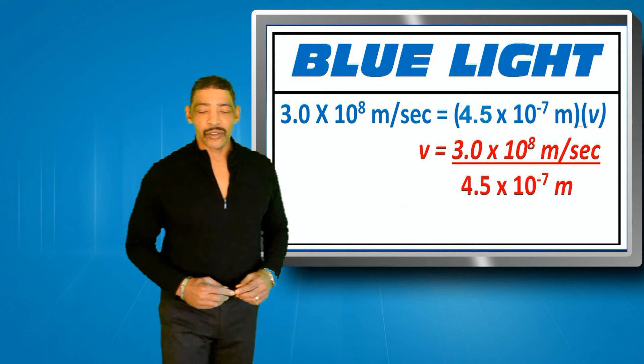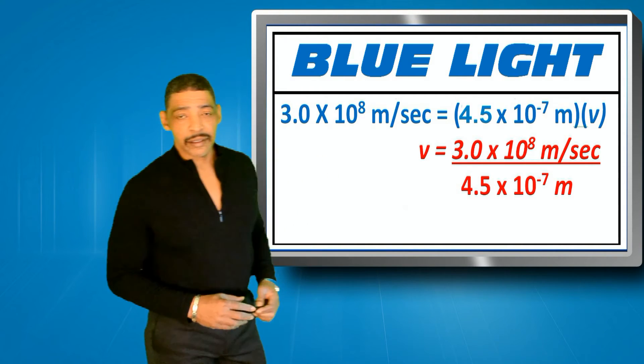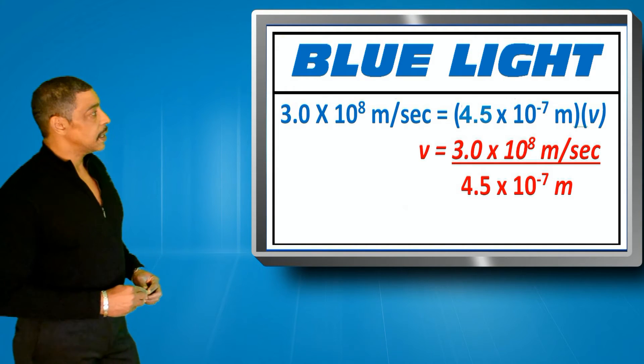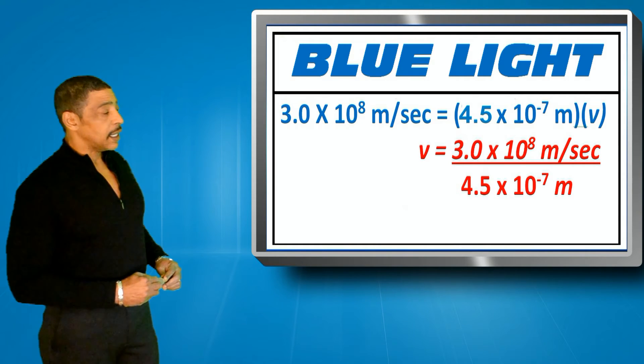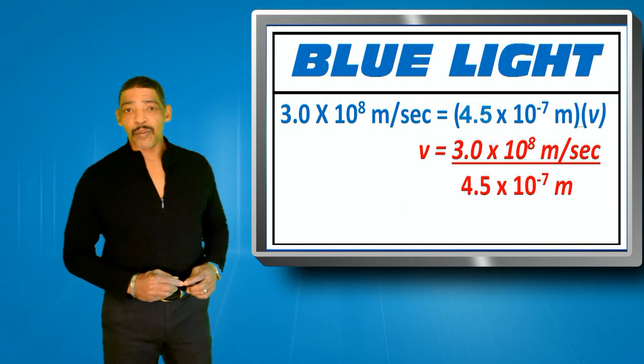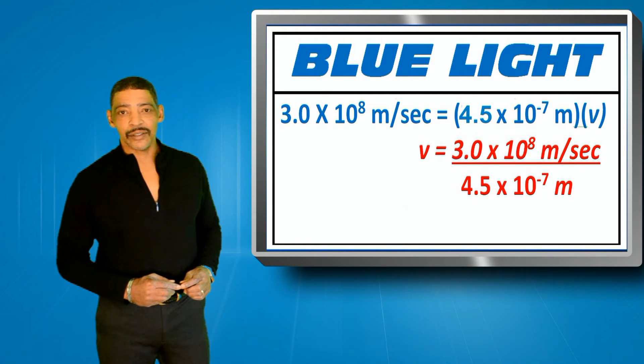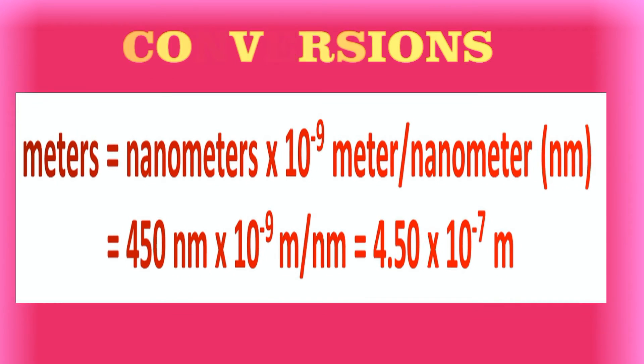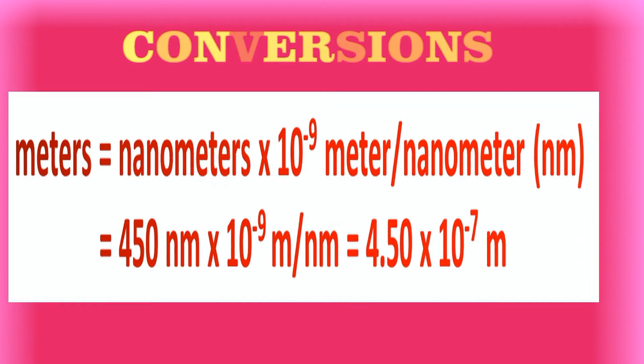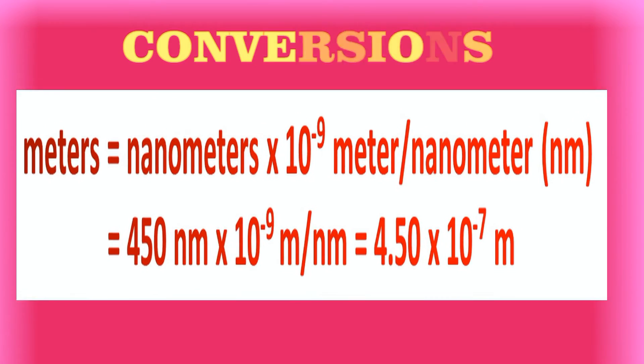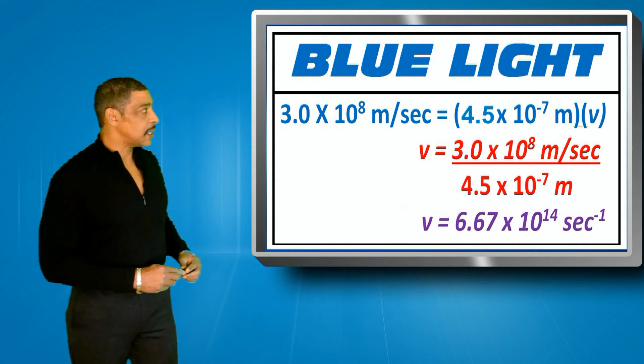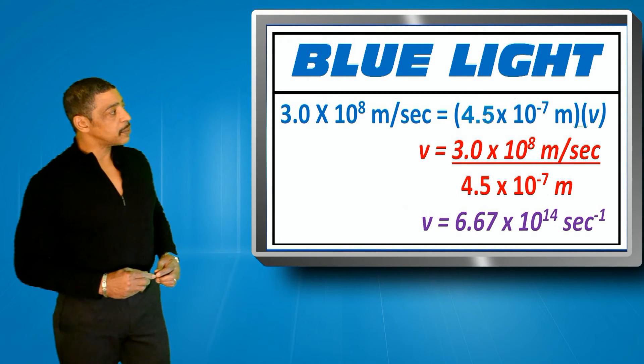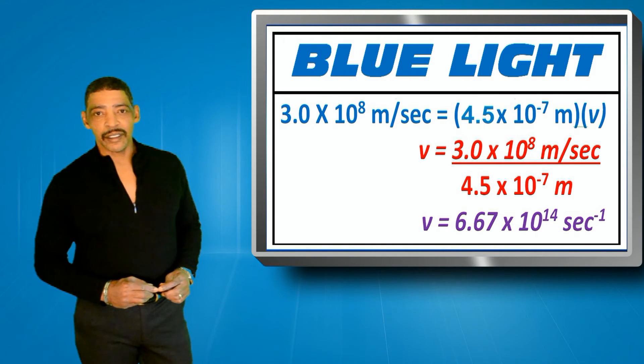The same technique may be used to determine the energy of a photon of blue light. First, we determine the frequency by dividing the speed of light, 3.0 times 10 to the 8 meters per second, by the wavelength, which will be 4.5 times 10 to the minus 7 meters. To convert nanometers to meters, we simply multiply nanometers times 1.0 times 10 to the minus 9 meter per nanometer. Inserting the data and solving generates the following. The frequency will be 6.67 times 10 to the 14 reciprocal seconds.